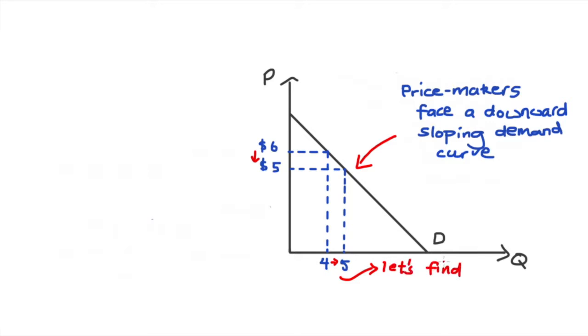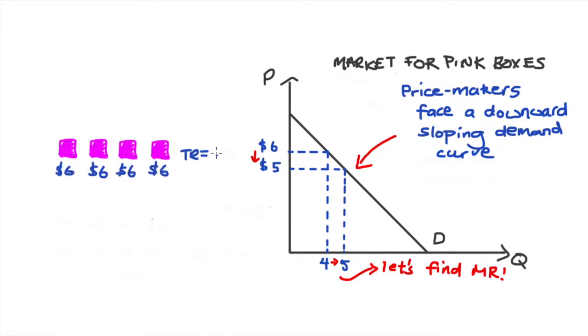let's keep on with this example and find the marginal revenue associated with going from the first point of production to the second where we've increased from four to five and decreased our price from six to five. And let's just pretend that this is a market for pink boxes because they're easy to draw. So initially, I was selling four pink boxes at $6 each. So my total revenue is P times Q, which is six times four, which is 24.